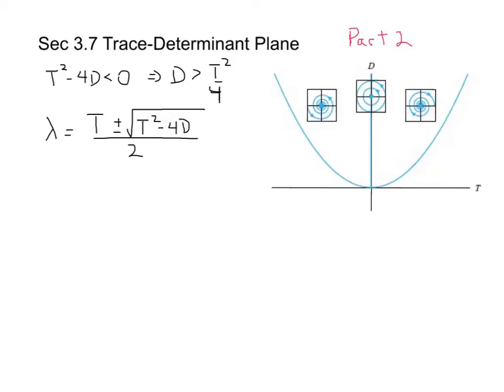This is part two of our discussion of the trace-determinant plane. Picking up where we left off, I had already described how we can characterize parts of the plane by simply asking the question: when is t squared minus 4d equal to 0, bigger than 0, or less than 0?